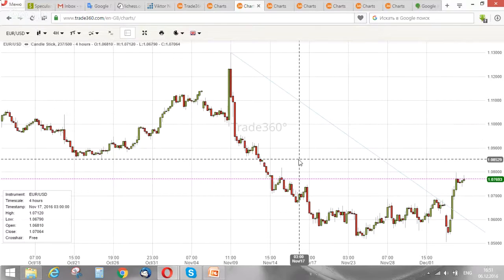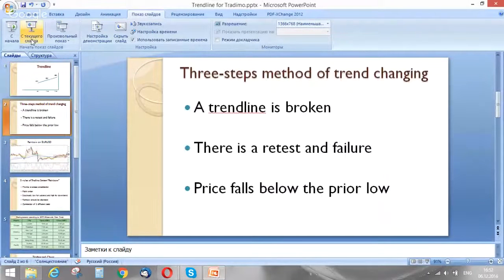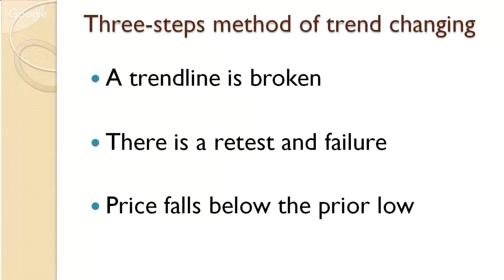This three-step method correctly predicts a trend change from 60 to 80 percent of the time. The three steps are: first, the trend line is broken; second, there is a retest and a failure; and third, the price falls below the prior low — if we are speaking about an uptrend. These three steps define a market that has moved from an uptrend to a downtrend.